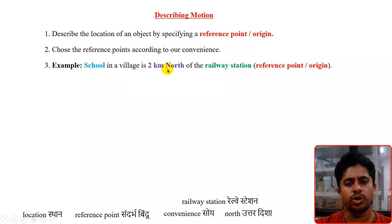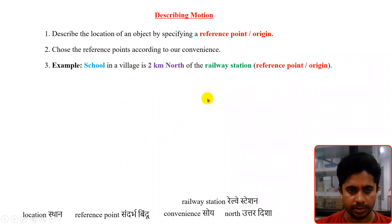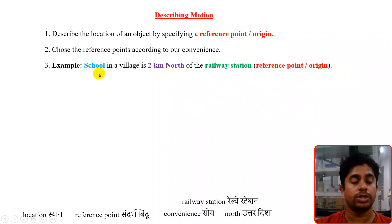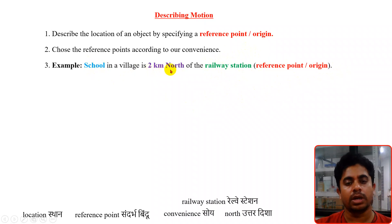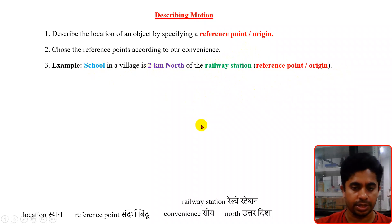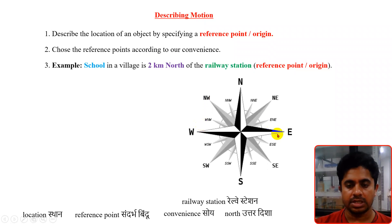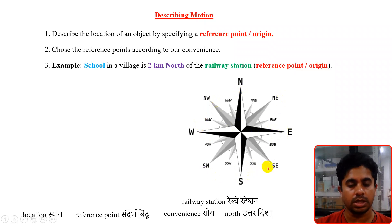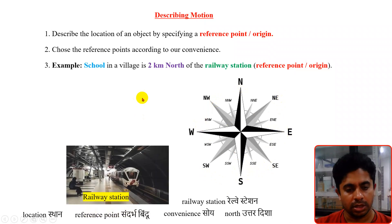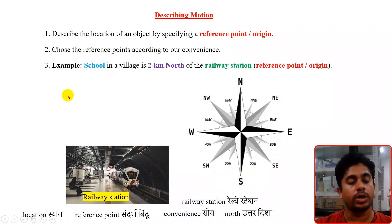A school in a village is two kilometers north of the railway station. Here, the railway station is our reference point or origin. With reference to this railway station, we want to define the location of the school. We know the directions — east, west, north, south, northeast, northwest, southwest, southeast — and we will make use of these directions.